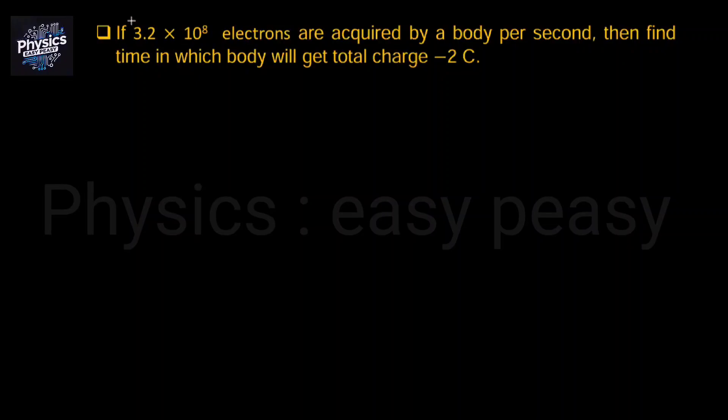I am given this question: if an object has 3.2×10^8 electrons per second acquired, how much time will generate total charge minus 2 coulomb? Find the time.